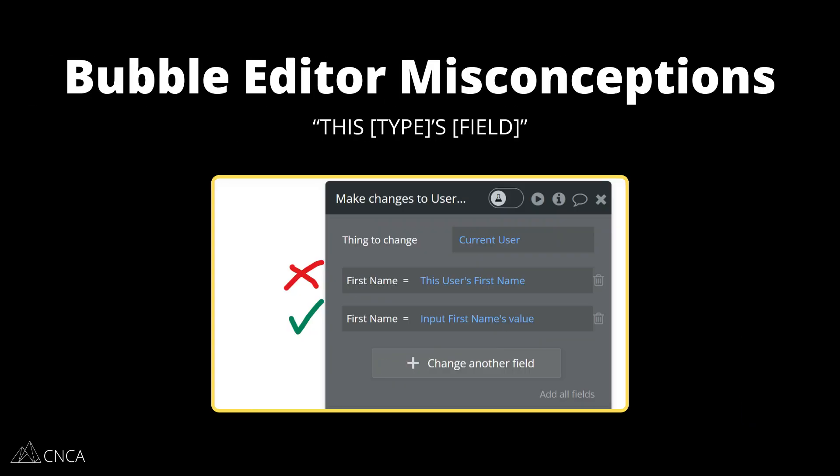The next area is something we see come up all the time with new Bubble users who are mapping inputs to their database and workflows. For example, if I'm modifying a user and I want to update their first name field to an input where they would have typed in their first name, what we'll typically see is 'first name equals this user's first name, last name equals this user's last name.' That has nothing to do with your input — you're just referring to the same value within that record and saving it back to itself. You want to make sure that you're actually referencing the input element that you've designed on the page. That is where the new value is being typed in, and that is the thing you want to capture and save to the record.